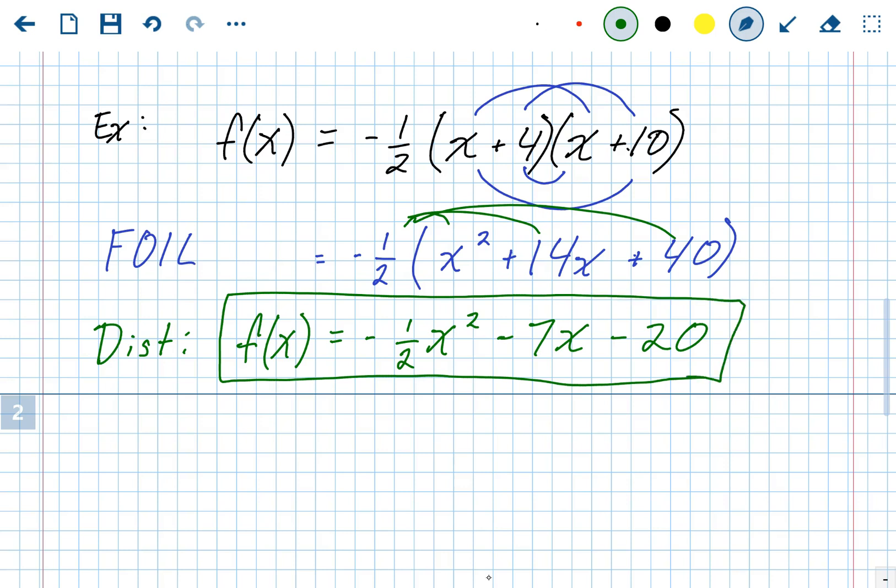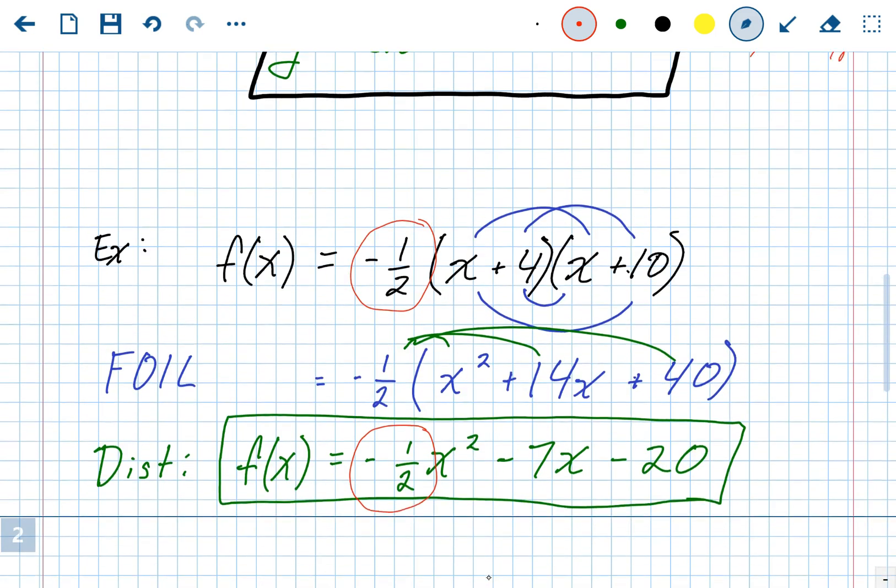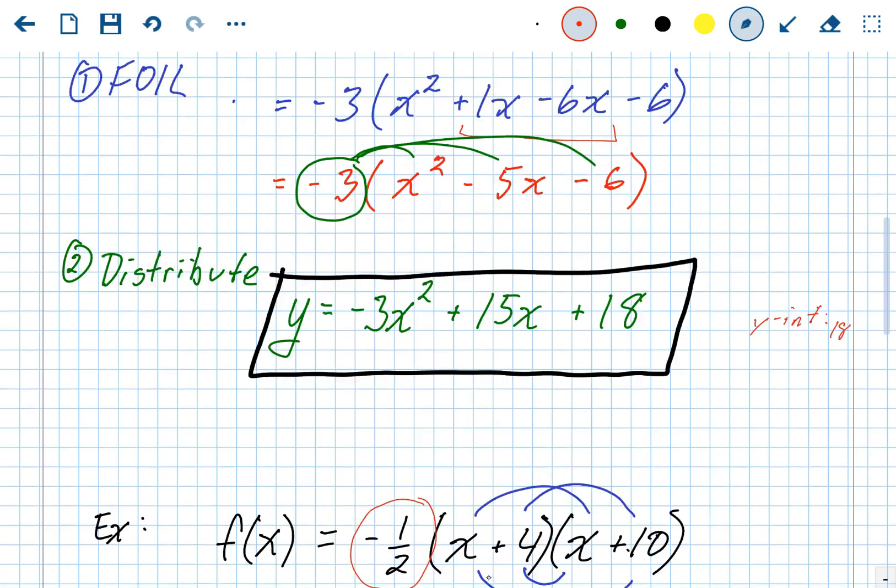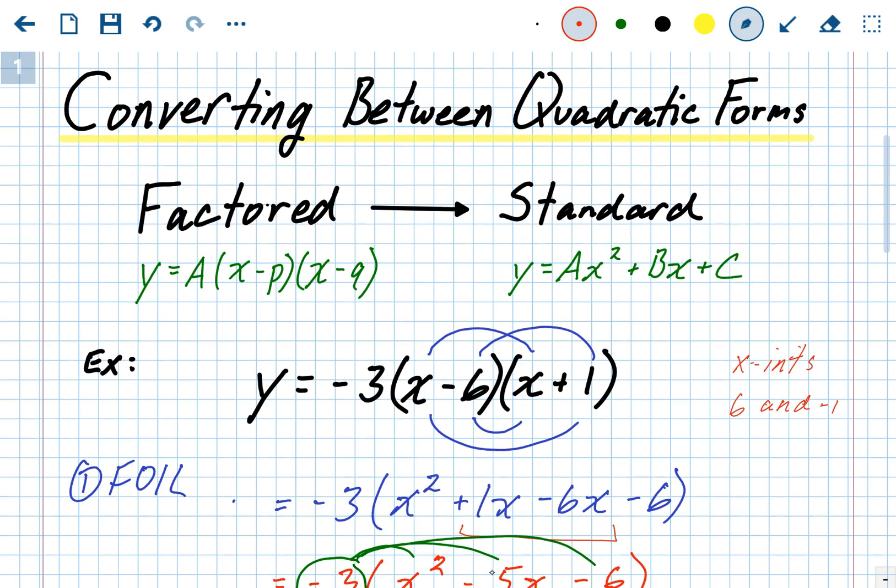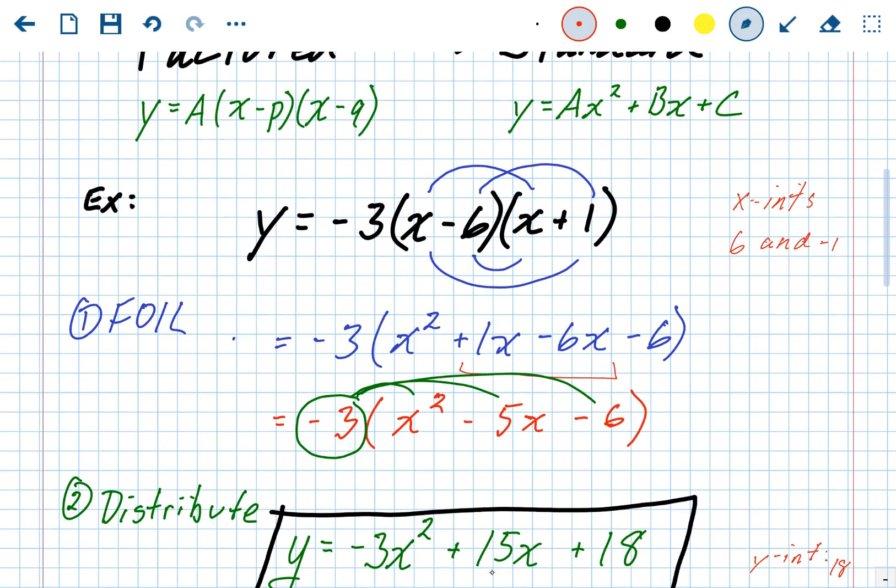Okay, again, notice the A value. The A value doesn't change. It never changes in any of these problems. Negative 1 half is what the A value that started. Negative 1 half is the A value we ended with. All right. That is factored form into standard form. Okay, that one's pretty easy. Basically two steps. Foil, combine if you can, distribute. Done.